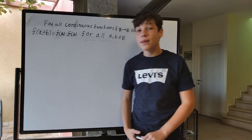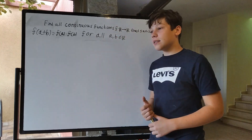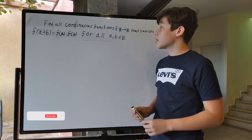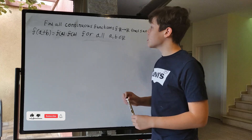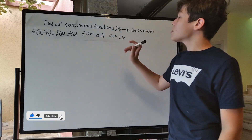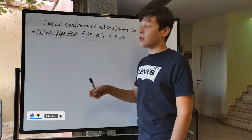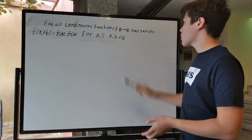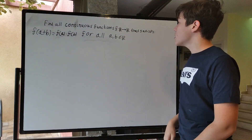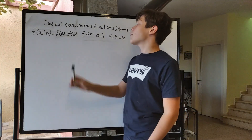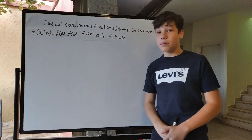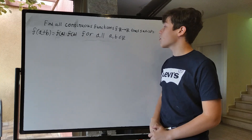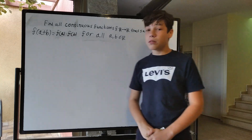Hello, welcome to this video. Today we're going to look at this problem that you may have heard of or thought of yourself, and we're going to solve it. The problem is: we need to find all the continuous functions from the real numbers to the real numbers that satisfy f of a plus b equals f of a times f of b for all a and b that are real numbers.